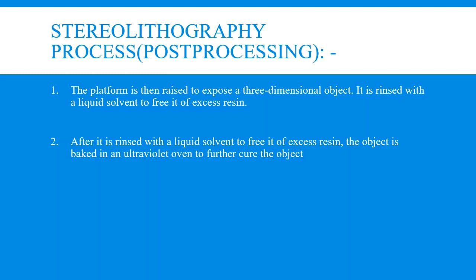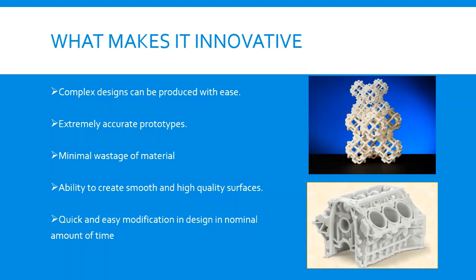Once the object is completely printed, it is removed from the tank and dipped into a liquid solvent bath, which gets rid of any excess photopolymer on the object. Next, the supports used in the creation of the object are clipped off, and the object goes into a UV oven for further curing. Once the curing is over, the object is ready for use.